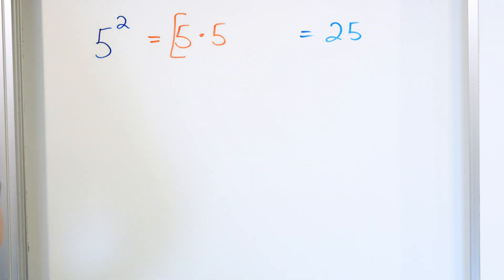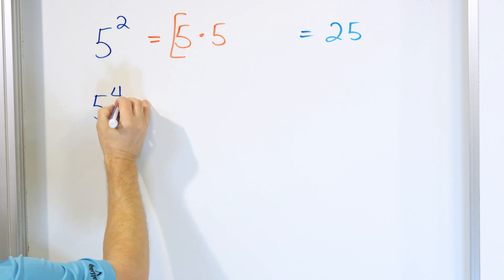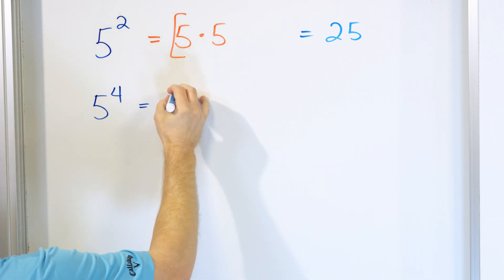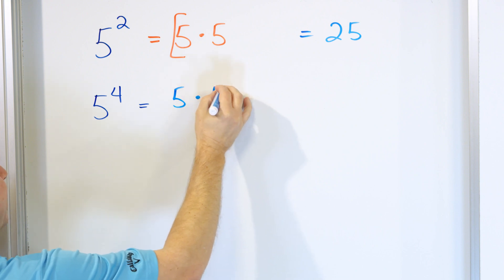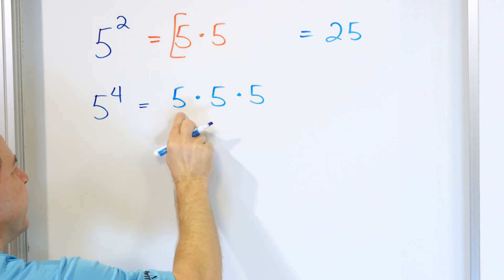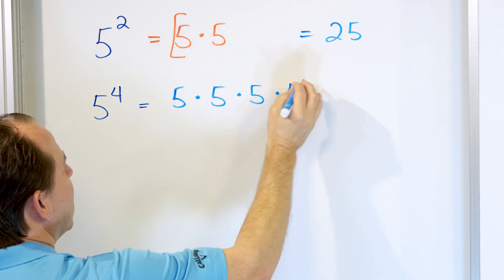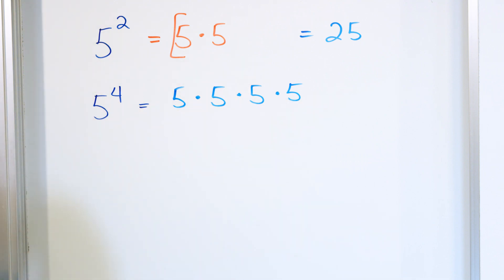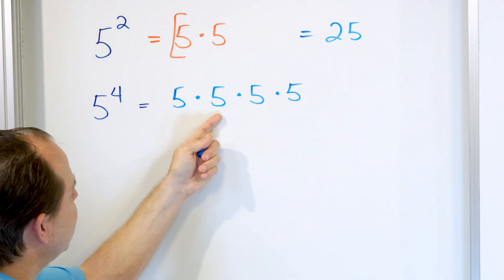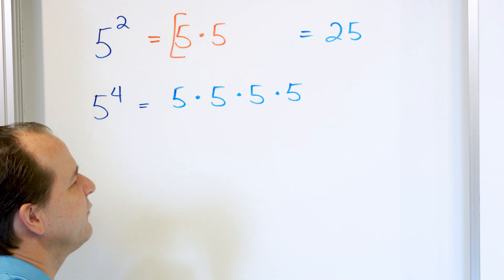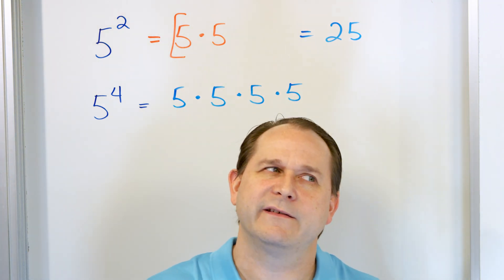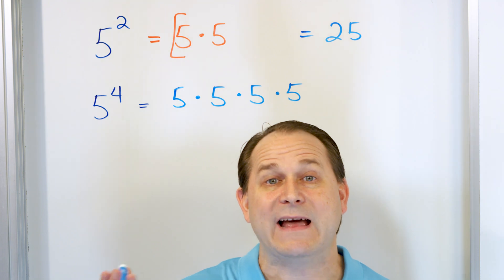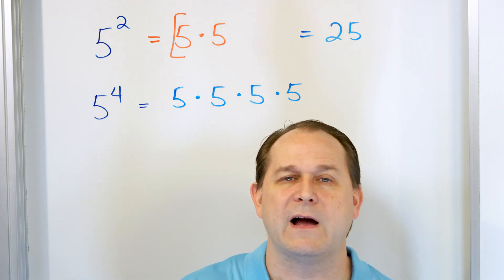For a little more practice, what if I had five to the power of four? How would I write this as the product of factors? Well, I would have the base five, multiplying times itself, then again times itself — that's five to the power of three — but we actually have a four, so we do it one more time. Five to the power of four: there are four of them multiplied together because the power is four. The point here isn't to calculate the answer; the point is to write out the exponent as a string of multiplication, because that's what we'll use to simplify algebraic expressions.